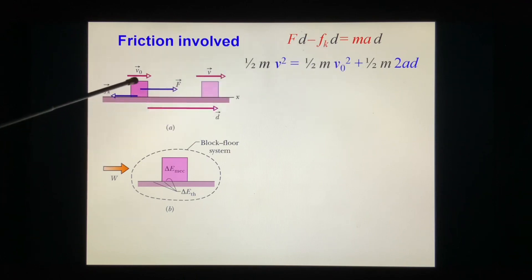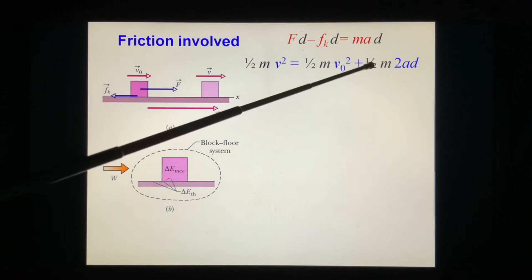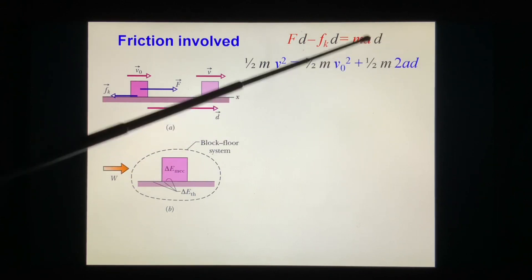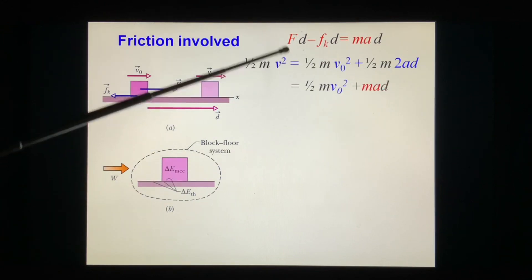This is the initial state kinetic energy. So Fd - f_k·d, and this term, we have v² cancel out mad. So mad = ½mv² - ½mv₀².